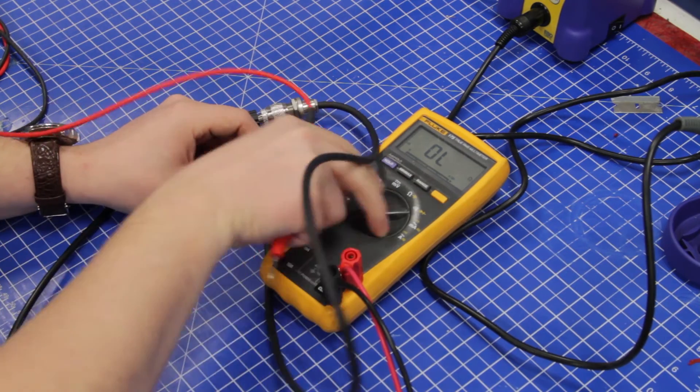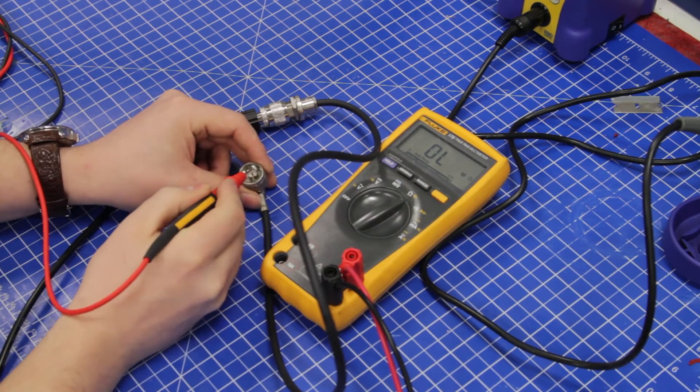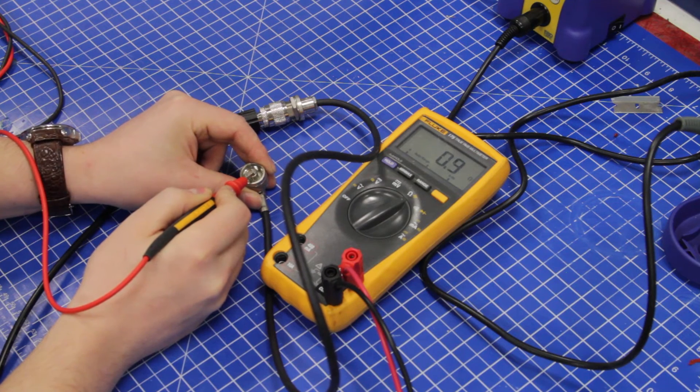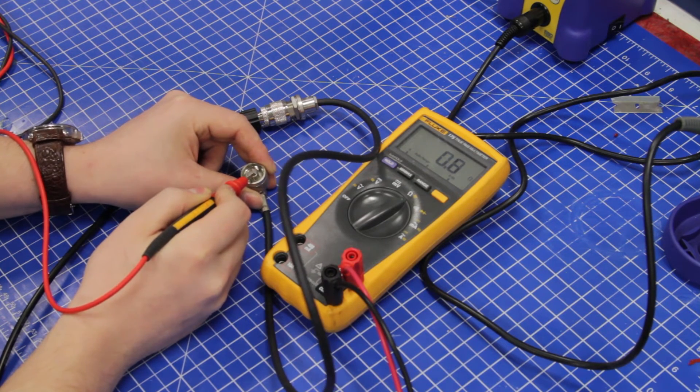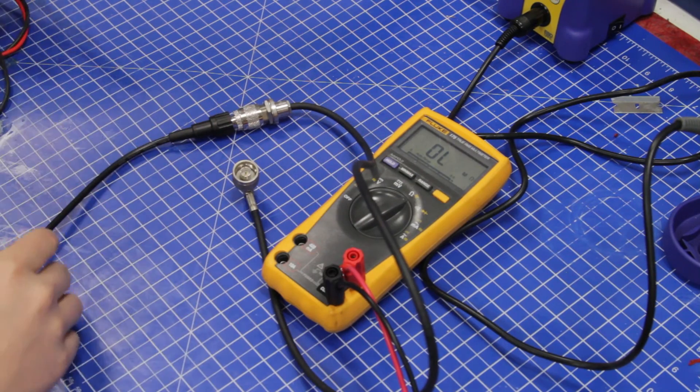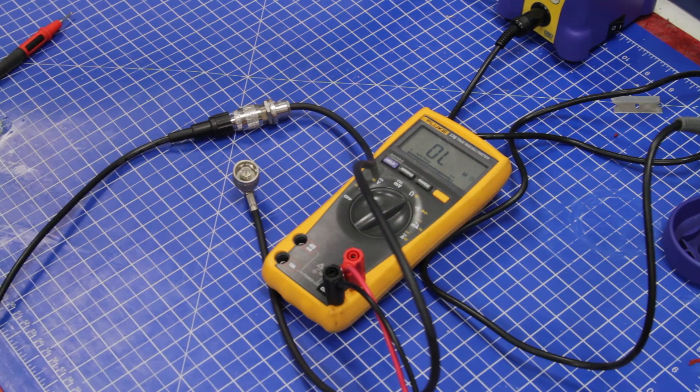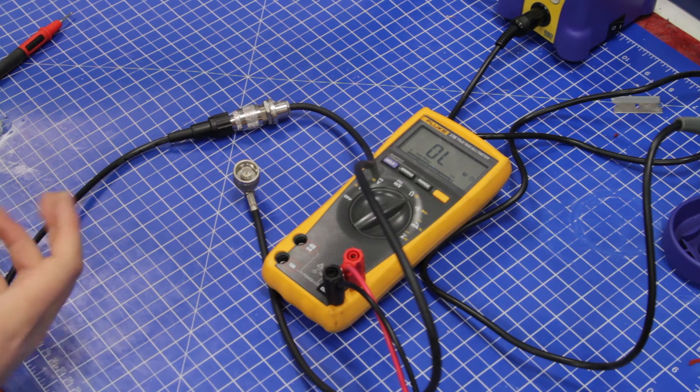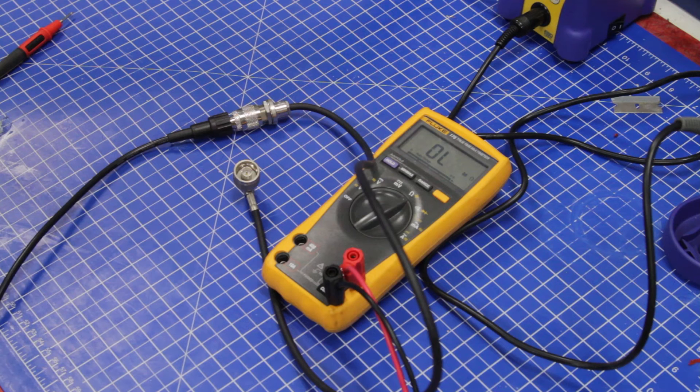Because now if we put this into the ohms range, I don't know if you can see that, but we get it down to less than an ohm. 0.2 or something. It's really good conductivity. Almost no resistance to speak of. Then we know that the cable is okay. So you also got the center conductor working.